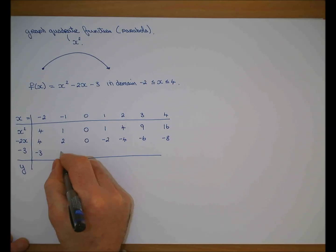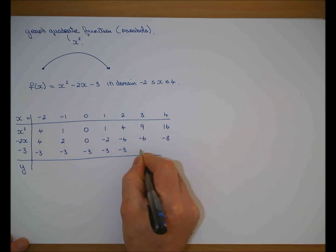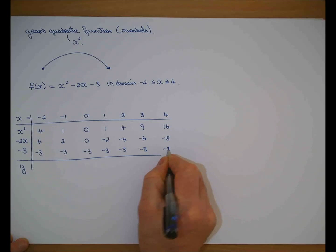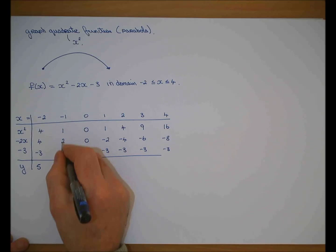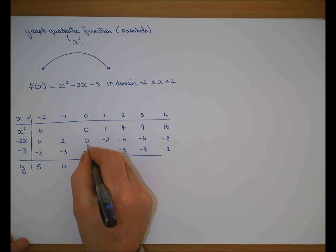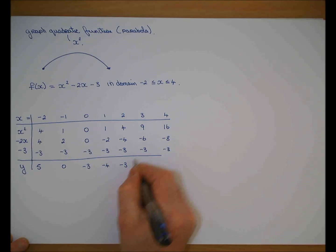And I put in the constant minus 3 for each column. Adding them up: 4 plus 4 minus 3 is 5. 1 plus 2 minus 3 is 0. 0 plus 0 minus 3 is minus 3. 1 minus 2 minus 3 is minus 4. 4 minus 4 minus 3 is minus 3. 9 minus 6 minus 3 is 0. 16 minus 8 minus 3 is 5.